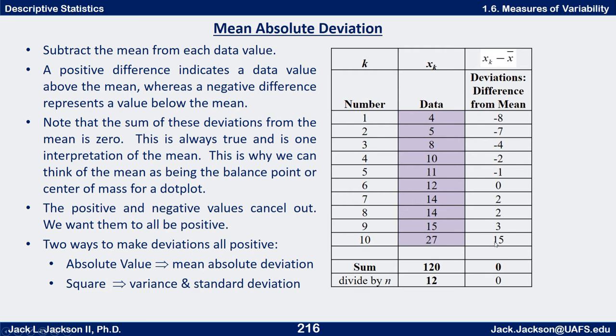These negatives and positives cancel each other out every single time. It's for this reason that we can think of the mean as being a center point or balance point or center of mass for a dot plot.